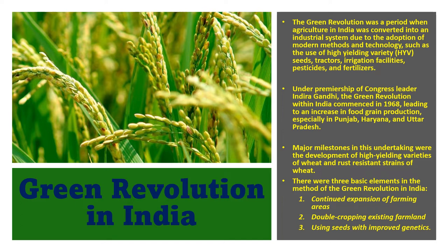Major milestones included the development of high-yielding varieties of maize and rust-resistant strains of wheat. The basic elements of the green revolution in India were based on three components: continuous expansion of farming areas, double cropping of farmlands, and use of seeds with improved genetics.